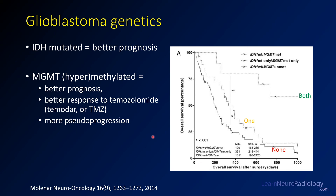Regarding glioblastoma genetics: IDH mutation is associated with lower grade tumors and tends to have a better prognosis. On higher grade tumors, it's thought to have arisen from a low-grade tumor, so there's secondary GBM. MGMT methylation also gives a better prognosis — this is a DNA repair enzyme, and if it's methylated, cells can't recover from radiation as well, so these patients do better with radiation and temozolomide. They also tend to get more pseudoprogression. A survival curve shows that having both IDH mutation and MGMT methylation gives a much better survival than having one or neither.